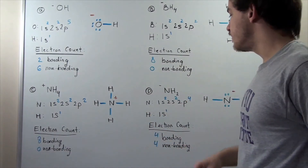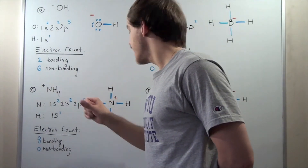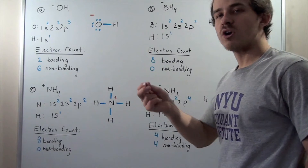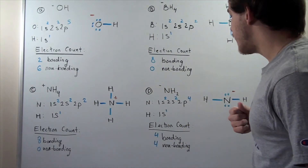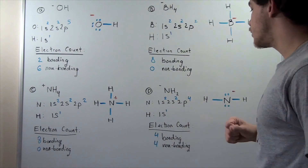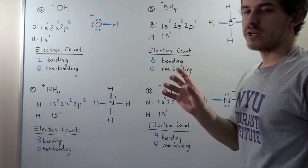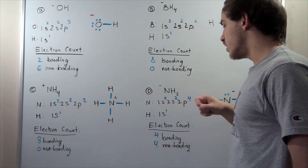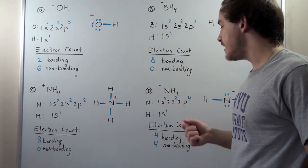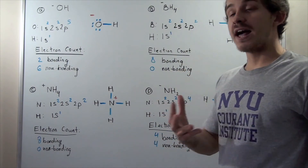Let's go to part D — NH₂ with a minus one charge. Here we have a minus one on the N, which means it has one more electron than in its neutral state. Instead of having three electrons in its 2p, it will have four electrons in the 2p orbital. So two go into the 1s, two into the 2s, and four into the 2p. H is neutral with one electron in the 1s. With two H atoms, we have two electrons from H, and two plus four gives six electrons from N — eight valence electrons altogether.